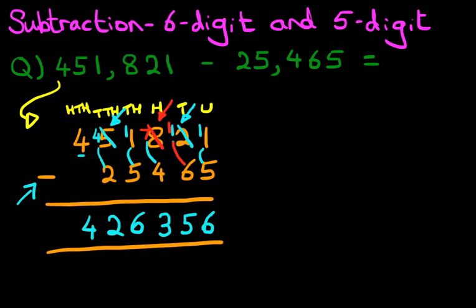And we have our answer. It is 426,356. That is correct. A nice big tick. I told you it was going to be easy. So that is how we do subtraction of a six-digit number and a five-digit number using the vertical format.